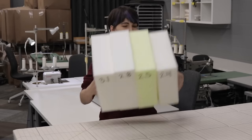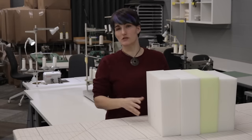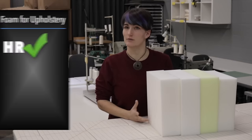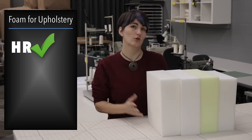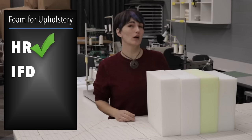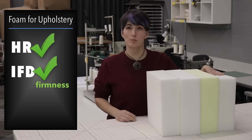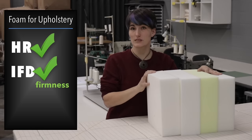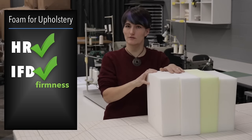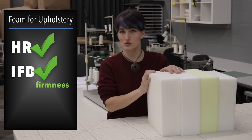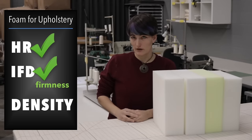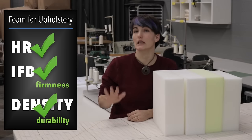So let's summarize. For upholstery, you really want to look at high resiliency foams. In order to determine how firm it is, you want to look at the IFD. Under 20 for backs, mid 30s for seat cushions, and upwards of 45 for things like dining room chairs.